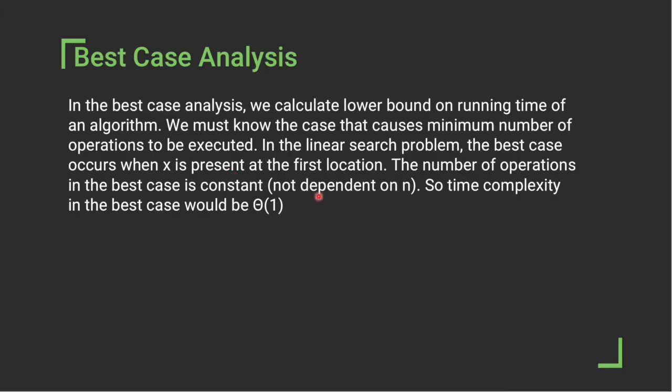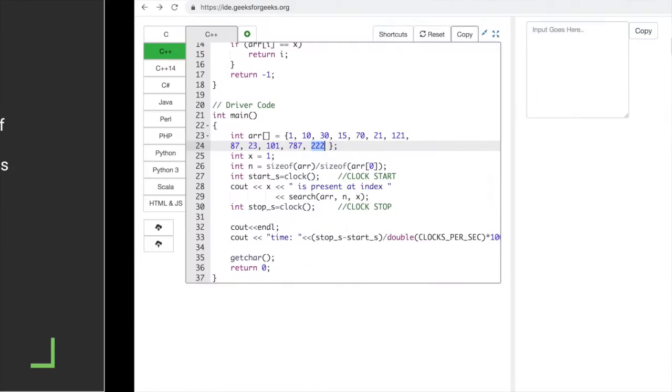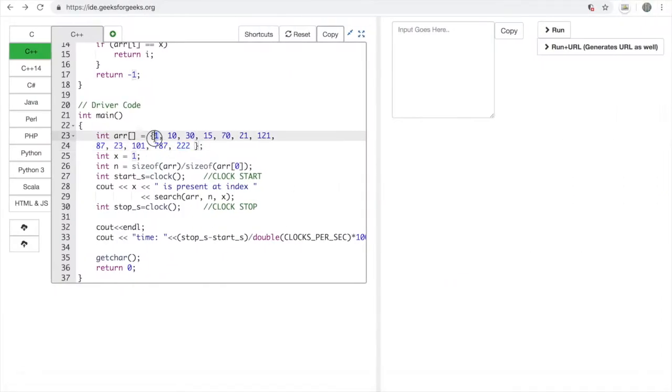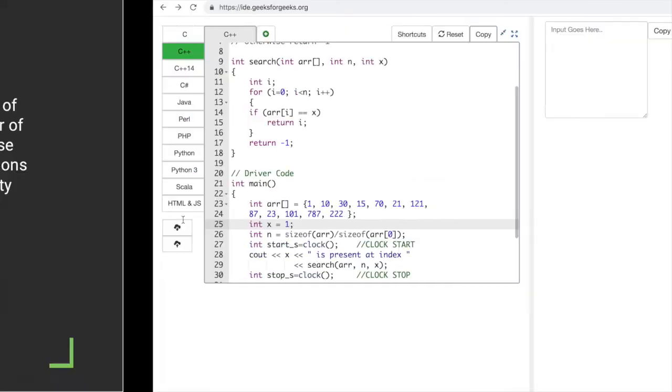The number of operations in the best case is constant, not dependent on n, so the time complexity in best case would be O(1). Here, one will be easier to search and will take less time than searching 222.